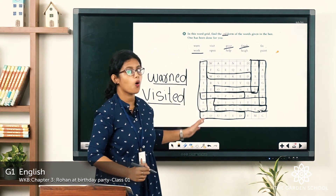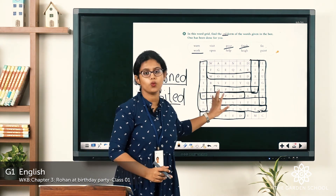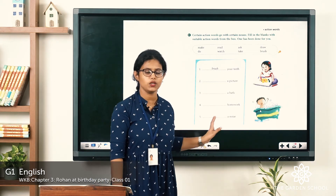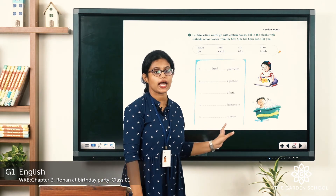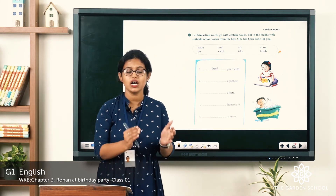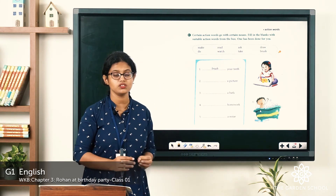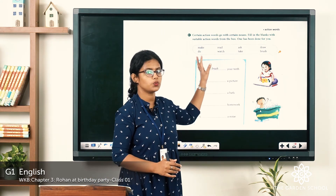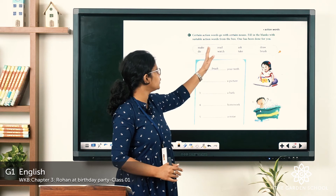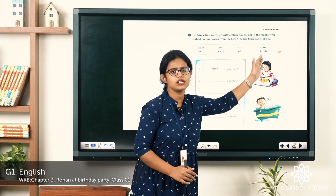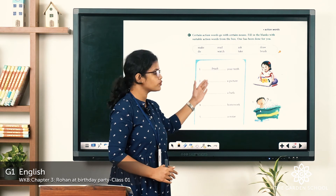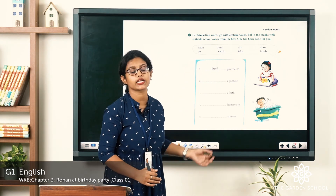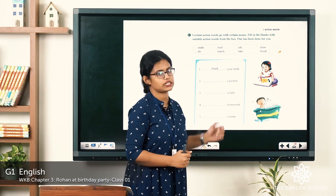We have found all the words in the word grid. Now we are going to do another exercise based on action words. A word that represents an action is called an action word. The action words given here are: make, do, read, ask, take. You have to fill in the blanks with the correct action word that suits each sentence.